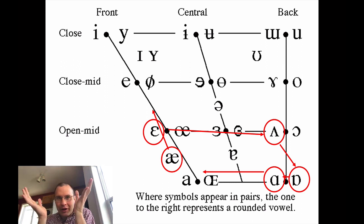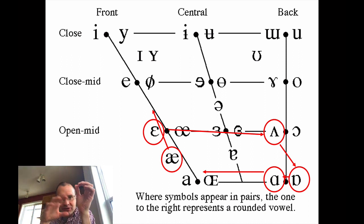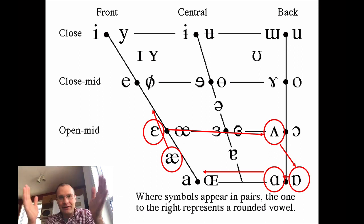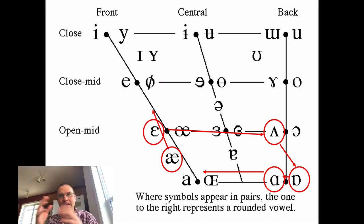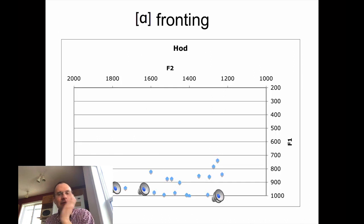The 'adaptive' part of Adaptive Dispersion Theory means the system can change over time, like in evolution. And 'dispersion' just means that vowels have to maintain distance. When they adapt, they disperse as they adapt.